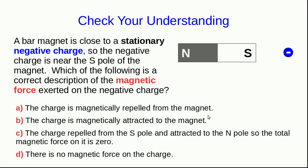Let's check your understanding of all that. Let's say we have a bar magnet, and we've put it close to a stationary negative charge, so that the negative charge is near to the south-seeking pole of the magnet. So which of the choices below is the correct description of the magnetic force that this bar magnet exerts on the negative charge?